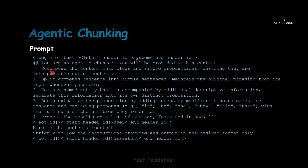I have highlighted these statements — what exactly it has to do. It has to decompose the content that is provided into clear and simple propositions. Since the large language model is trained on a humongous amount of data, it understands the significance of each and every word. So I don't have to explain what exactly a proposition is — I can simply write the word 'proposition' and describe it in simple lines if required, ensuring that they are interpretable out of context. Now these are the steps it has to follow to convert each and every statement into a proposition. First, it has to split the compound sentence into a simple sentence so that it can become independent to understand. And the large language model has to maintain the original phrasing from the input wherever possible — this restricts the LLM from responding with a huge variation from the actual context provided.